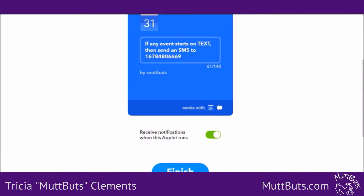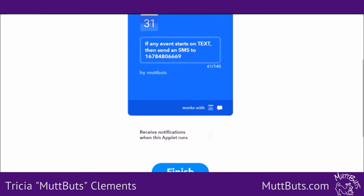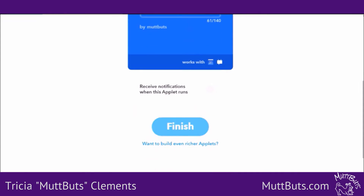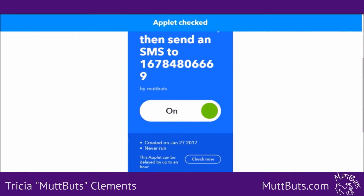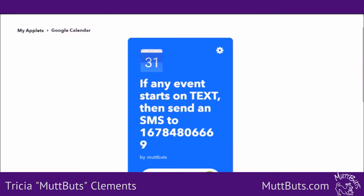Then create action. On this one, I do not like to receive notifications when they run, because when they run I get a text of it. But there are some that I do like to know when they are running. Then simply say finish. So it says: any event starts on Text Calendar, send an SMS to this phone number. You need to have the IFTTT applet on your phone in order to get the text to work, so make sure that's on your phone and log in to your account.